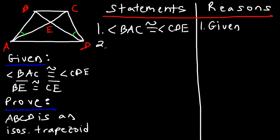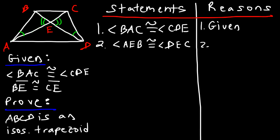Statement 2 — angle AEB is congruent to angle DEC. Notice that these two angles are vertical angles: this is angle AEB and this is angle DEC. As we know, vertical angles are congruent.